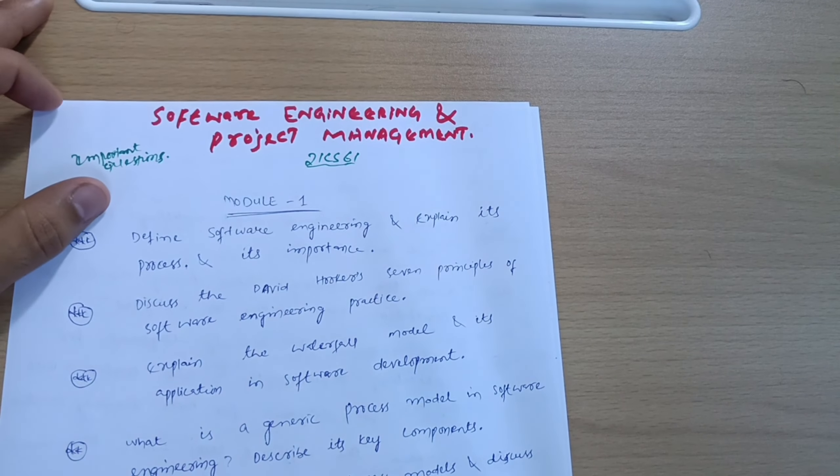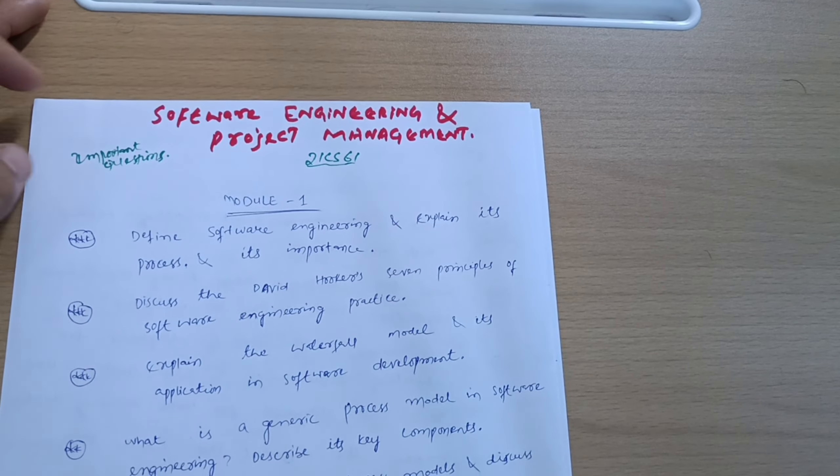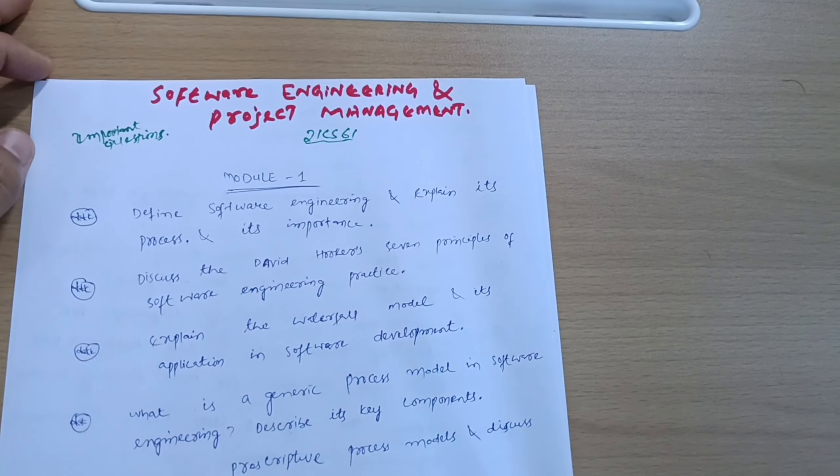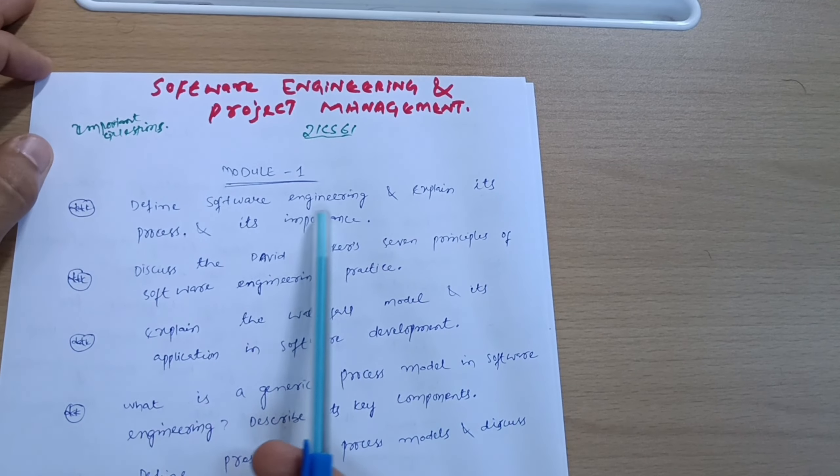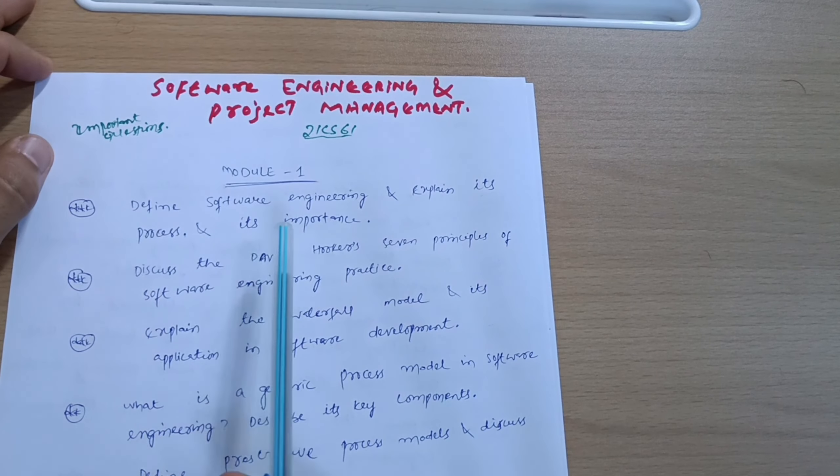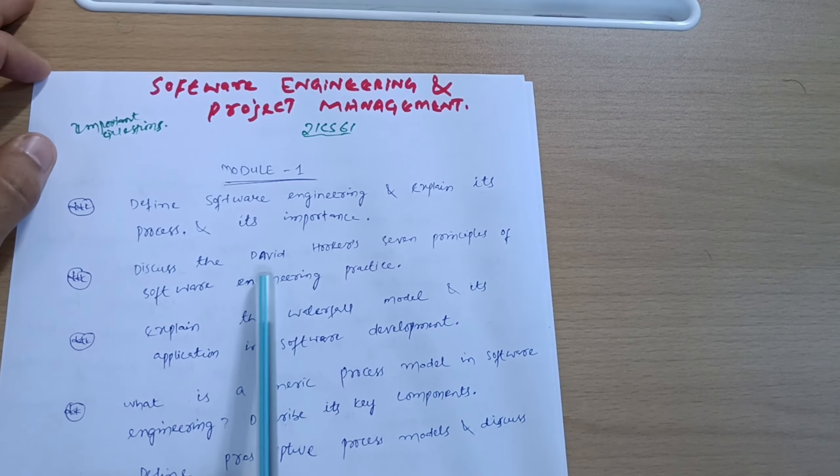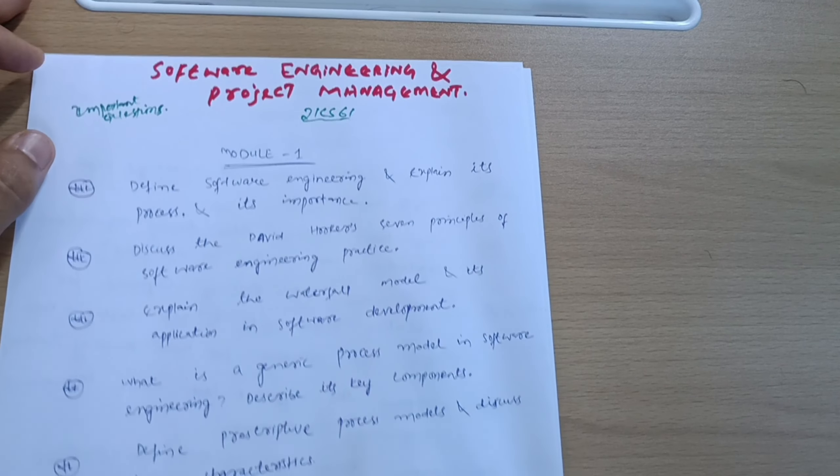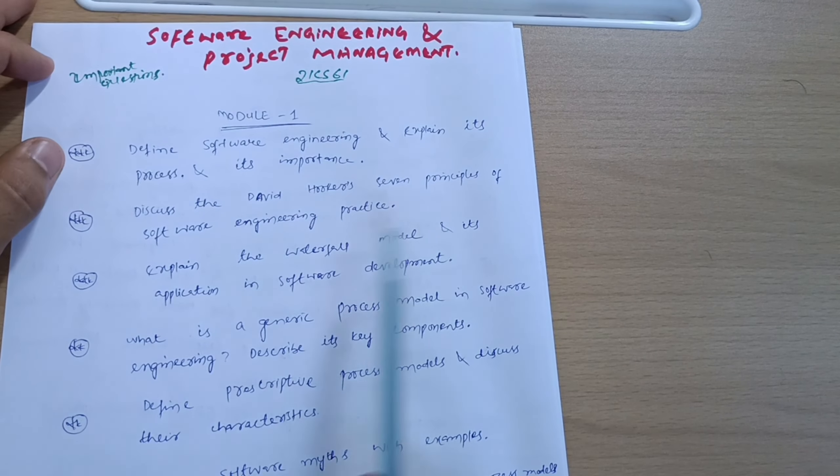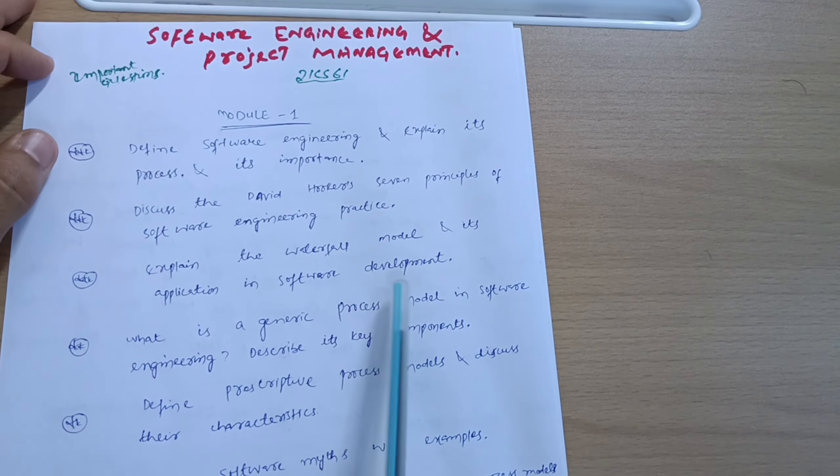Let me start with the most important questions module-wise. First, we'll take Module 1. Define software engineering and explain its process and importance. Discuss David Hooker's seven principles of software engineering practice. Explain the waterfall model and its application in software development. What is a generic process model in software engineering?